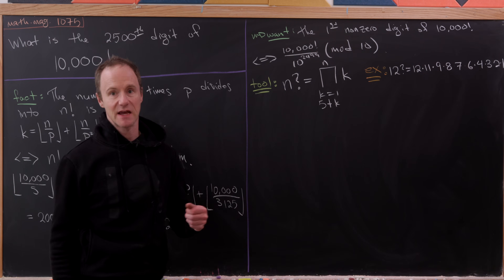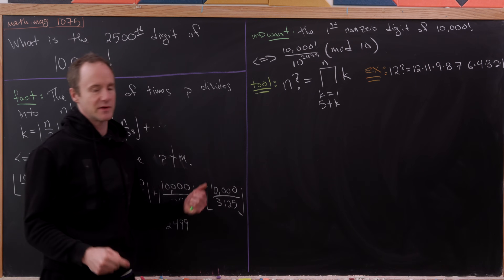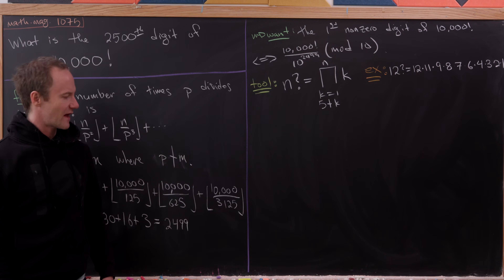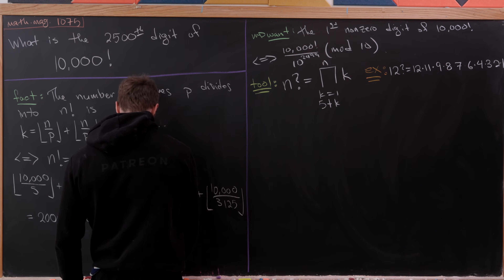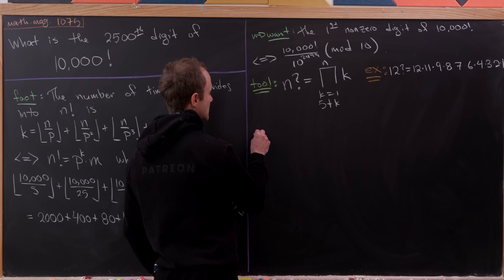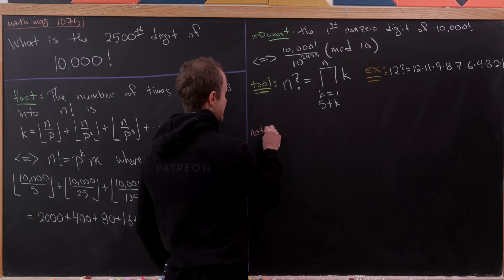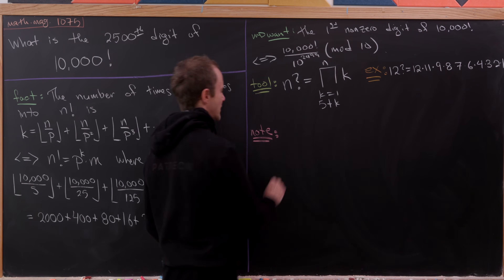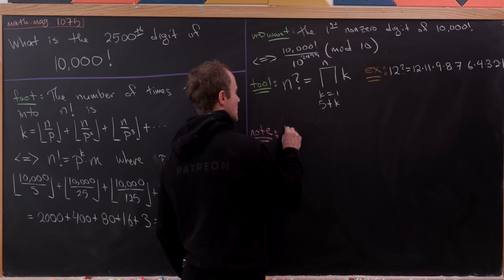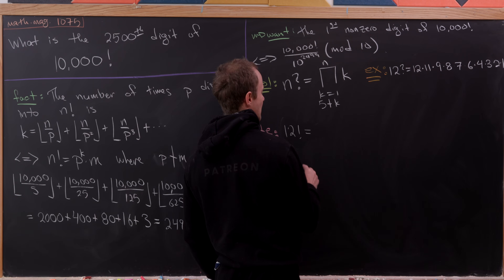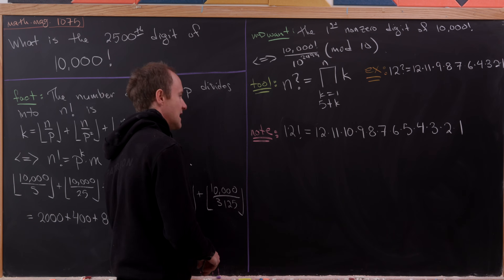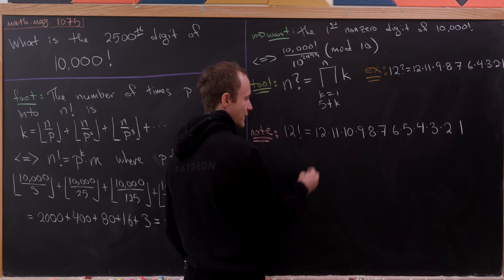For instance, 12? equals 12 × 11 × 9 × 8 × 7 × 6 × 4 × 3 × 2 × 1. Observe that we had to skip 10 and 5 because those are the multiples of 5. Now what I'd like to observe is that we can in fact write a factorial in terms of this question mark operator pretty easily.